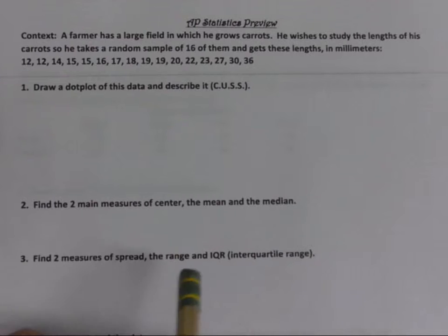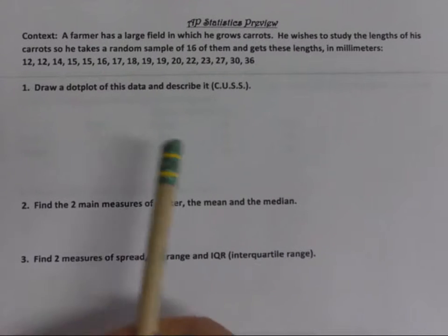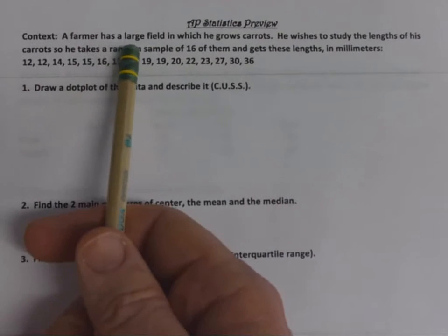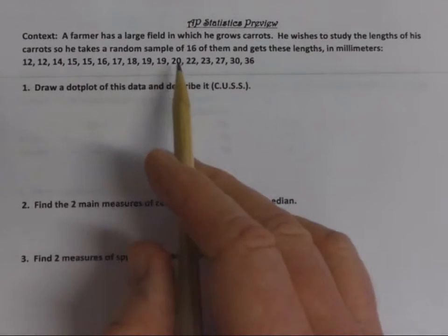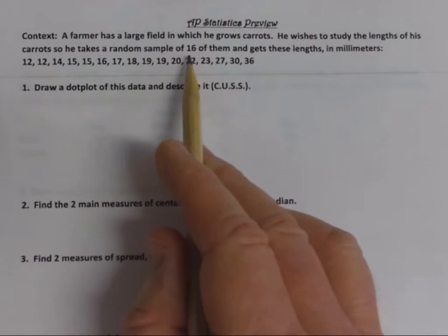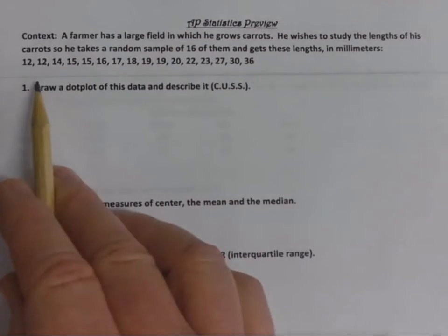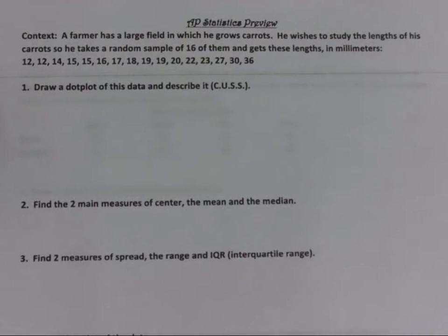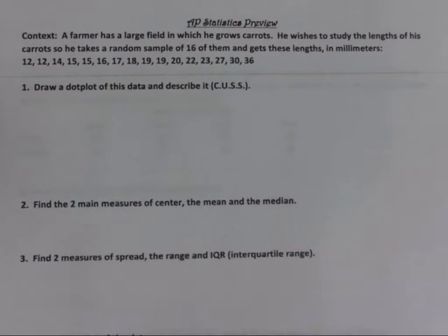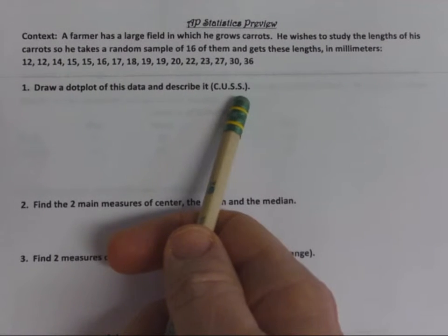Let's look at this context. A farmer has a large field in which he grows carrots. He wishes to study the lengths of his carrots, so he takes a random sample of 16 of them and gets these weights below. Draw a dot plot of this data and describe it. This is sort of the heart of chapter one — what we call cussing.